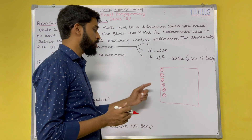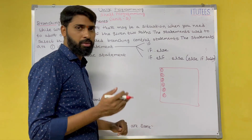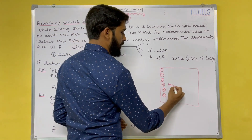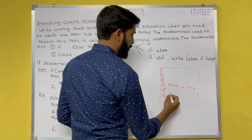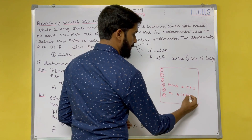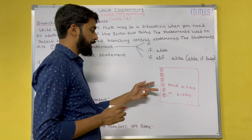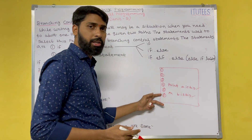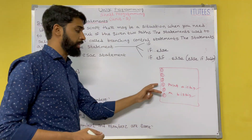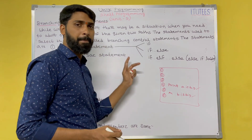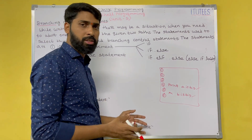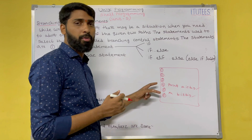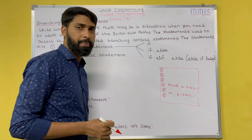In real-time applications, we are not going to execute all the instructions. For example, in finding the biggest of 2 numbers, you are going to print either 'A is big' or 'B is big'. That means you are going to execute either this instruction or that instruction — we cannot execute both. In these situations, we need a branching statement.